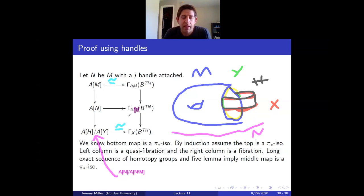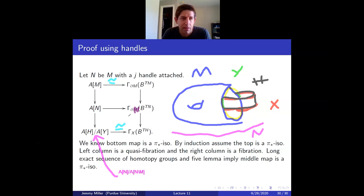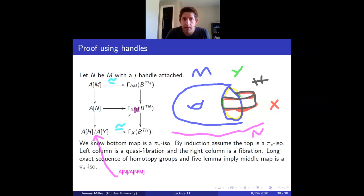That's the complete proof of Poincaré duality, at least the outline. Specializing to A=Z, M orientable and compact with no boundary, taking homotopy groups gives that i-th homology equals (n minus i)-th cohomology when M is orientable.